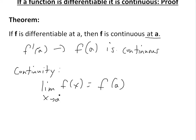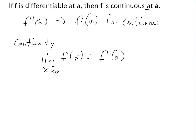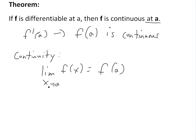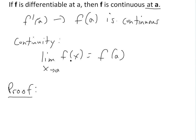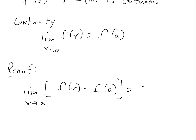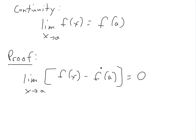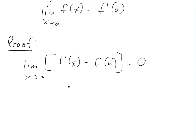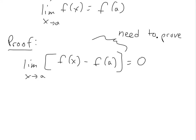You can see more on this in the video link below on continuity. So this is what we have to prove. Instead of proving it directly, we can prove that the difference is zero — that is, the limit as x approaches a of f(x) minus f(a) equals zero. Because if f(x) and f(a) equal each other, their difference must be zero. This form is easier to work with in the proof.